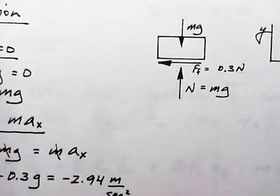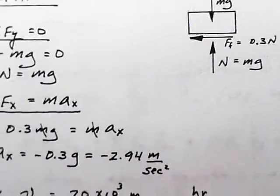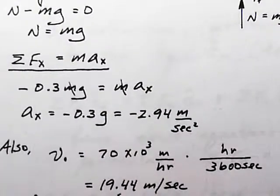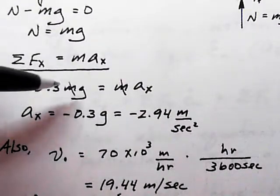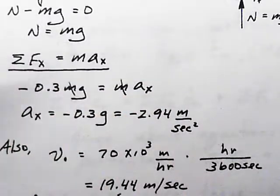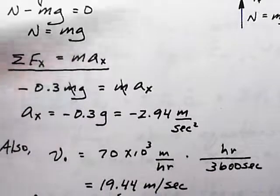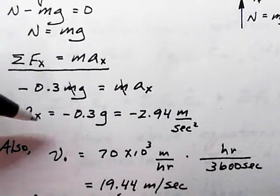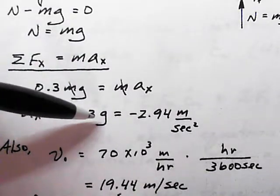The only force in the x direction is the friction force, so we have minus 0.3 mg equals mass times acceleration. Canceling the masses, we have that the acceleration aₓ is minus 0.3 g.